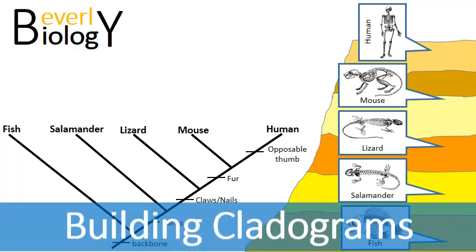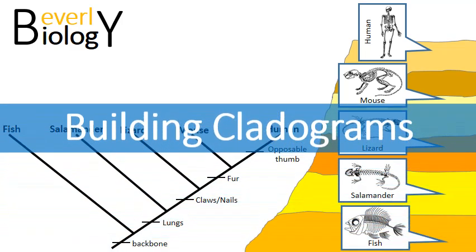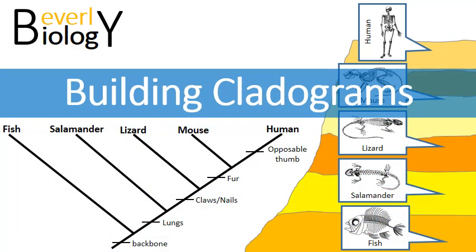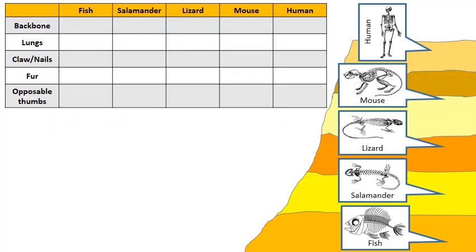The topic of this video today is how to build a cladogram. A cladogram is a branching diagram that is used to show how related organisms may be to one another and characteristics that they might share in common.